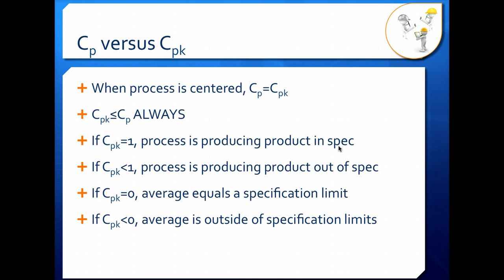When our process is centered between the specification limits, CP will equal CPK. CPK is always less than or equal to CP — it will never be greater than CP — because CP does not account for the process center. If your process is centered and CP equals CPK, that's as large as CPK is going to be. As soon as you shift even slightly off center, CPK will drop even though CP will remain the same, since it doesn't account for where the center is. Keep that in mind when you're calculating these values.